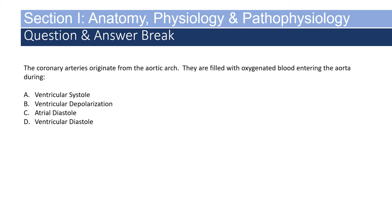The coronary arteries originate at the aortic arch. They are filled with oxygenated blood entering the aorta during: A — ventricular systole, B — ventricular depolarization, C — atrial diastole, or D — ventricular diastole. If you answered ventricular diastole, you are correct. The blood backfills into the aorta against the closed aortic valve and passively enters the coronary arteries.